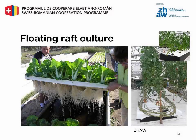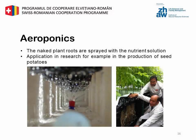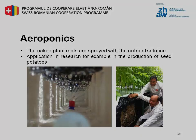Here you can see two examples of the raft culture with salads and tomatoes. Aeroponics is the process of growing plants in an air or mist environment without the use of soil or an aggregate medium. The naked plant roots are sprayed with the nutrient solution. Usually it is used for potato production systems.